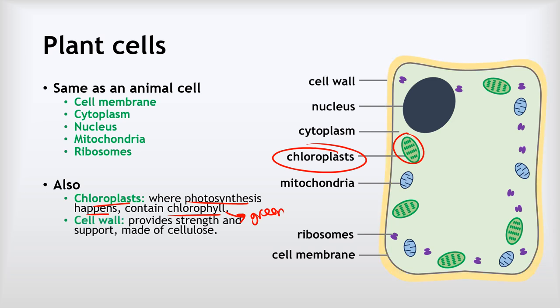The next thing we've got is the cell wall. Now the cell wall is this thicker layer here that sits outside the cell membrane, and it provides strength and support for the cell, and it's made of a chemical called cellulose.